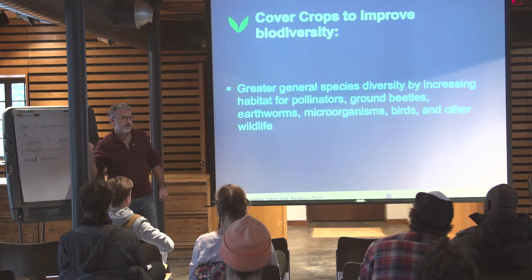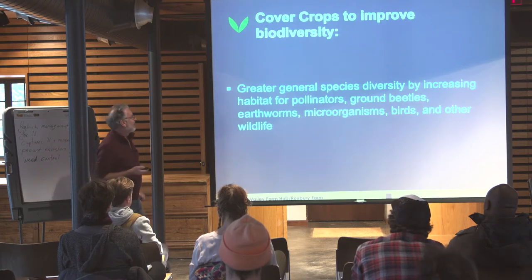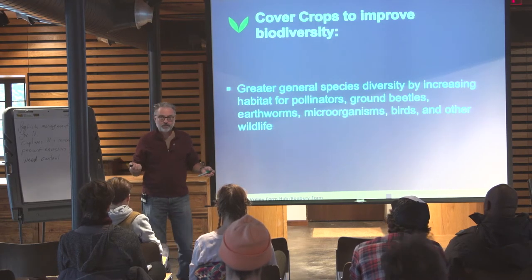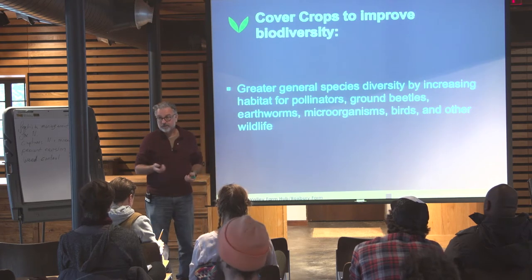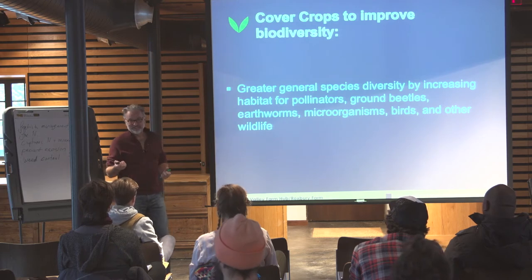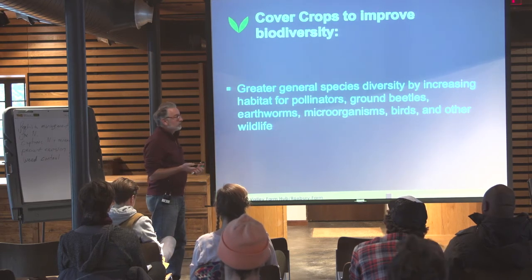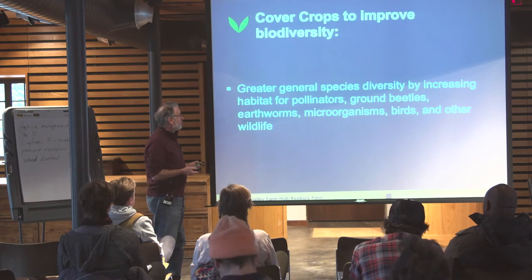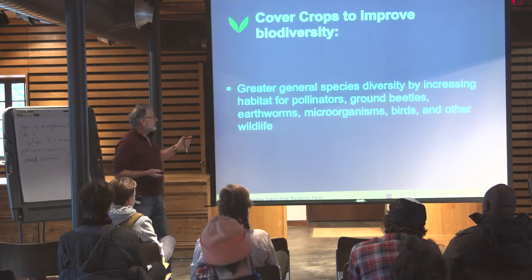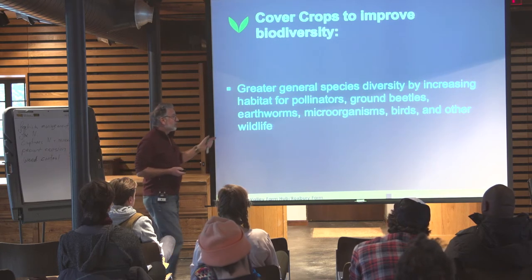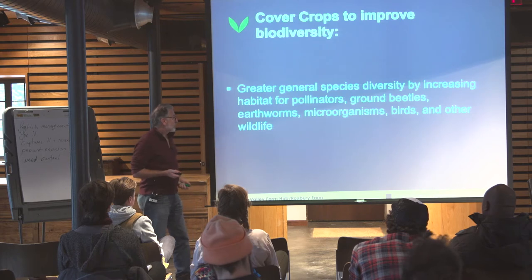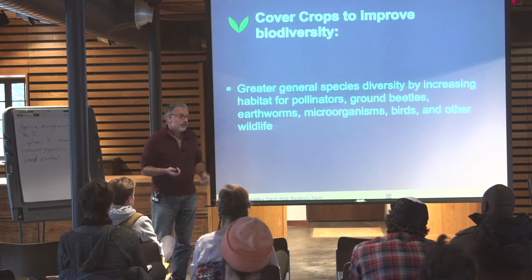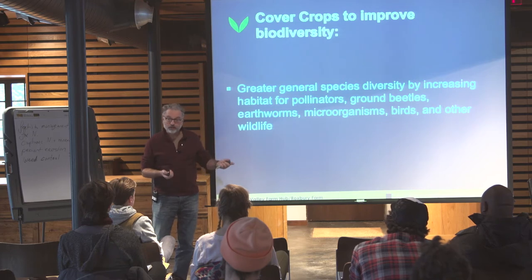One benefit I didn't hear anyone mention is improving biodiversity. Just the fact that you're bringing cereals — the grass family — into a vegetable rotation where there really aren't any grasses, and bringing in more legumes and having them flower, is significant. We see not only pollinators but ground beetles. These covers provide habitat for earthworms, microorganisms, fungi, and wildlife. Sometimes we grow a crop of buckwheat just to keep the deer away from the vegetables, because they might prefer the buckwheat.